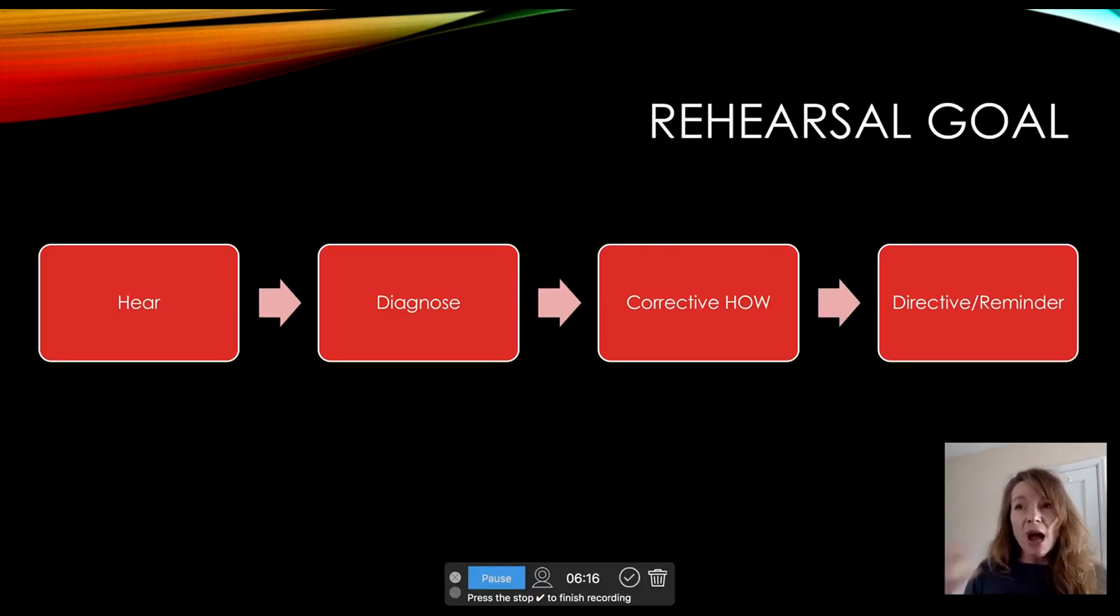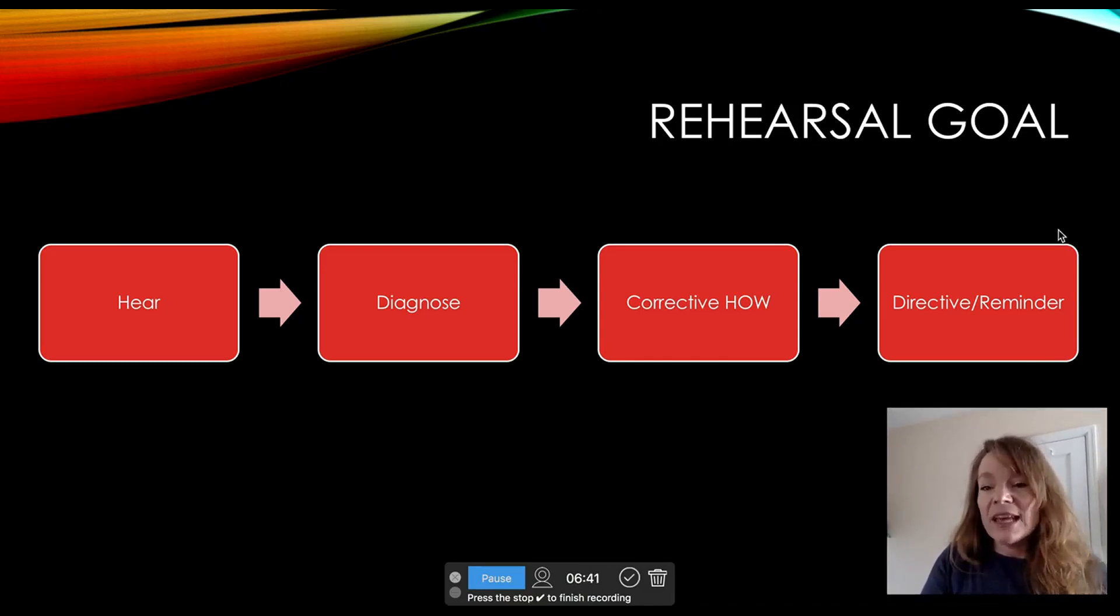In order to derive your five-word directive, you have to be thinking on your feet fast. We've already talked about diagnosis and correction and what that process looks like. You're hearing something, you know what you want to hear, you come up with the corrective how. The next step is to come up with your short verbal phrases that are directives or reminders of what the students have already been taught by you.